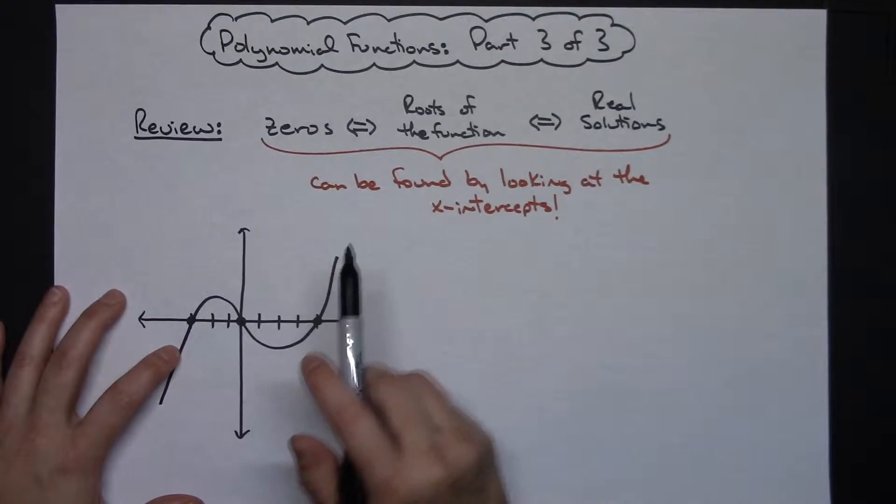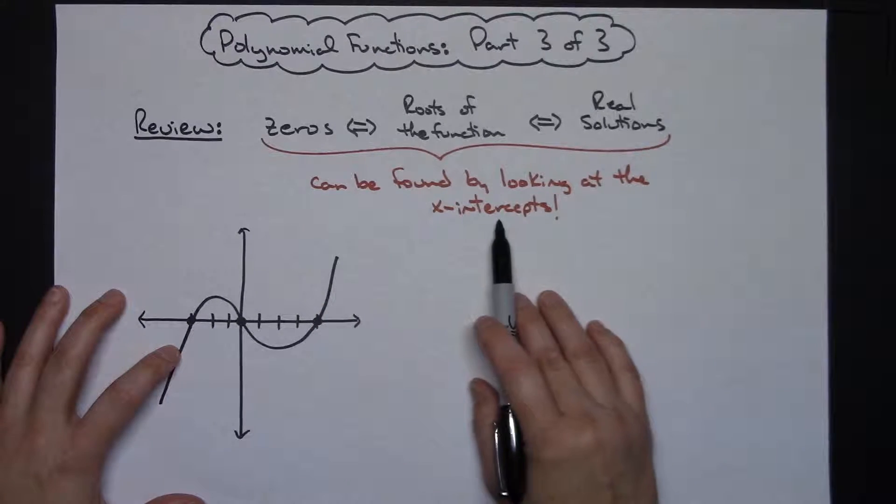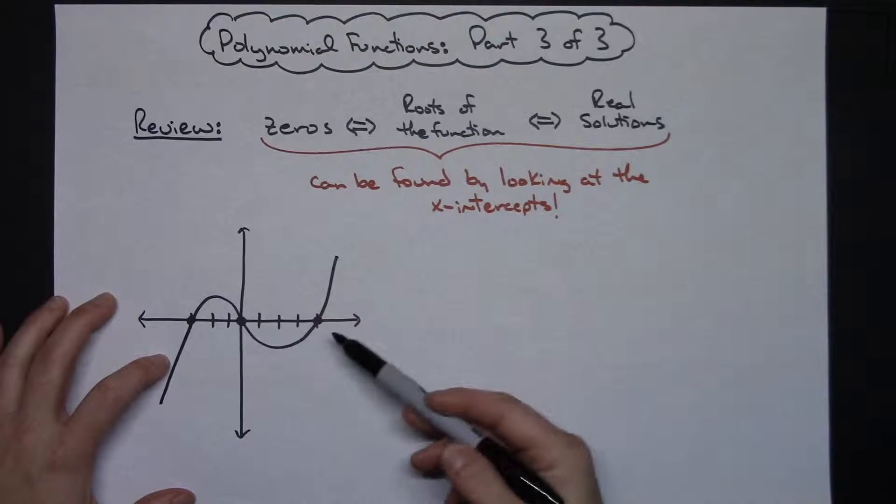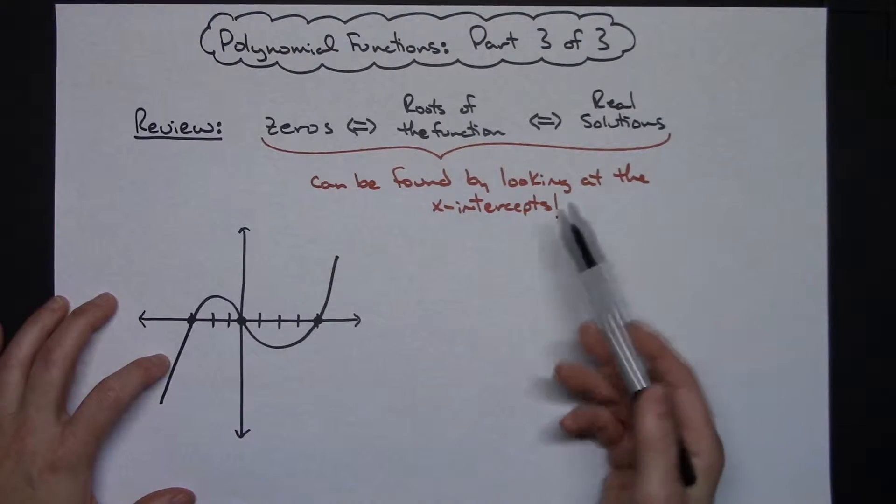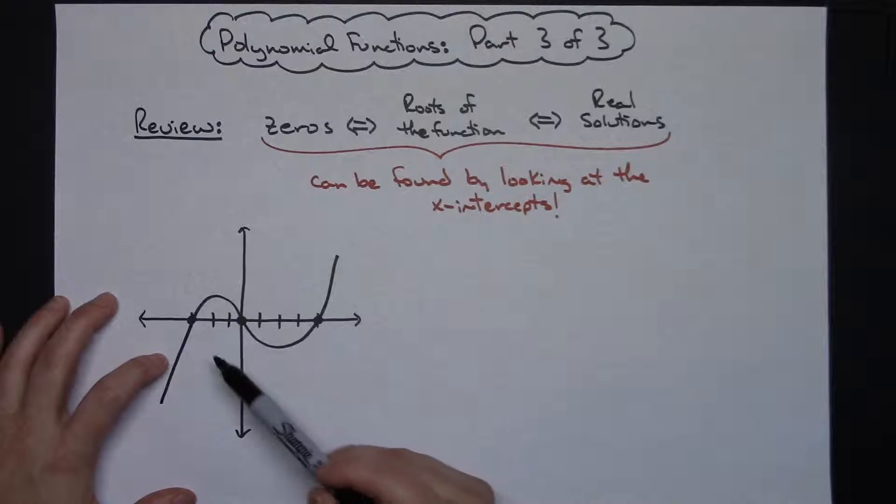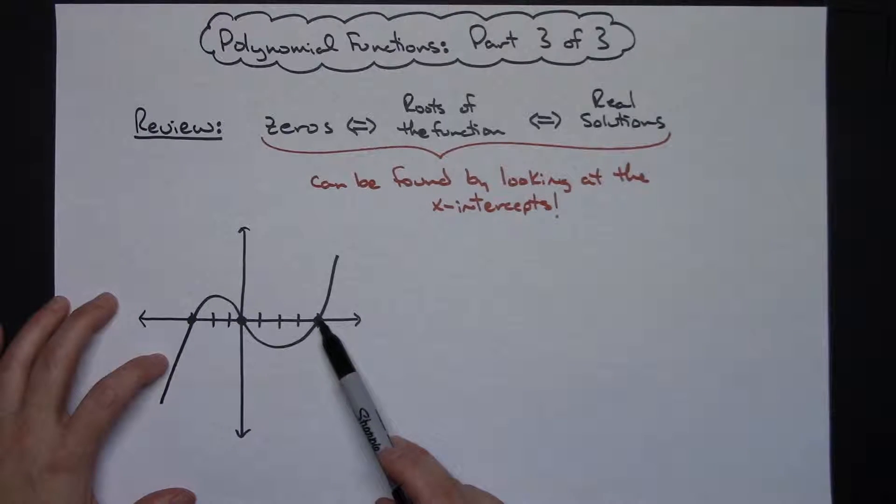All three of these things - if you have a graph, you can easily find them by looking at the x-intercepts. So sometimes they give you just the graph and they ask you to find the real solutions or the roots or the zeros of the solution of the polynomial curve. You would look at the x-intercepts. This one clearly has three zeros, three roots, three real solutions.